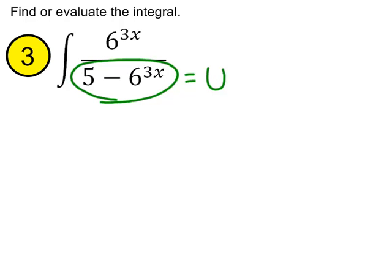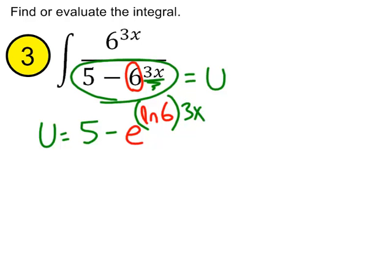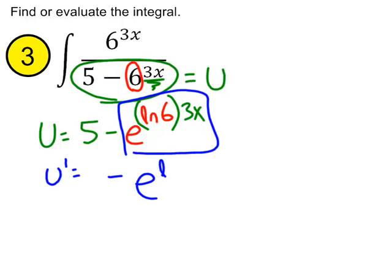Well, we start by rewriting u. We'd say u equals 5 minus, we'll rewrite this 6 as e to the ln6. And, now you're probably getting used to this. We'll just go ahead and multiply that exponent up top, parentheses 3x.